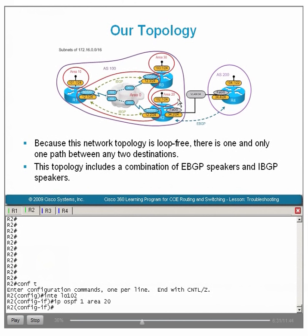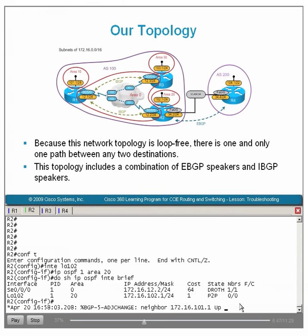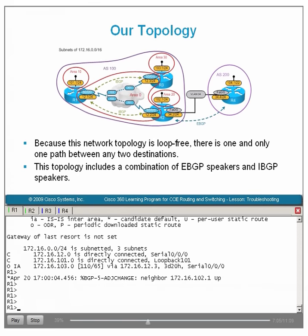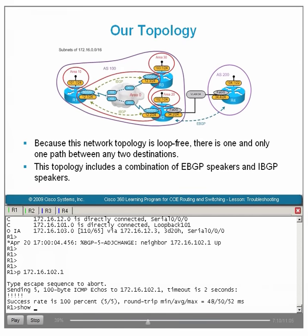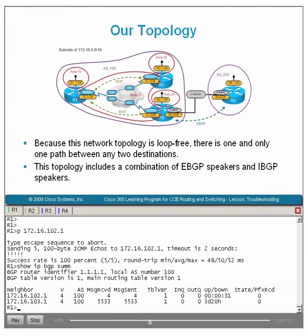Now the 172.16.102 prefix on loopback 102 has been assigned to OSPF area 20. Verifying with show IP OSPF interface, we now see the R2 loopback 102 interface in the OSPF interface table. Going back to R1, the pings are successful and the IBGP neighbor relationship between R1 and R2 is now operational. Our problem is solved using a systematic troubleshooting approach with basic tools in the Cisco IOS toolkit.